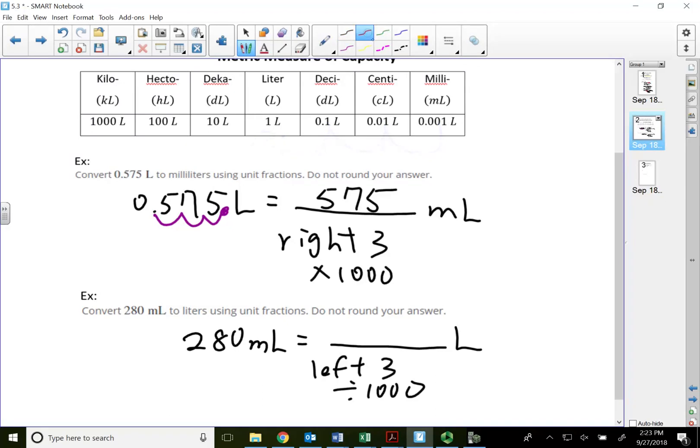So for the 280, my decimal is behind the zero. Three places to the left: one, two, three. Put a decimal now in front of the two, that will tell me my answer is 0.280 or 0.28.